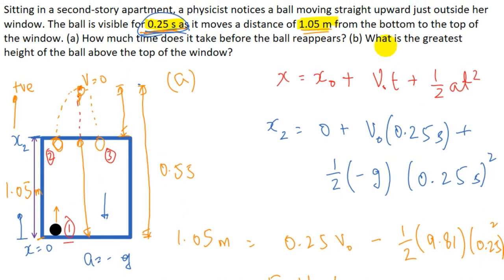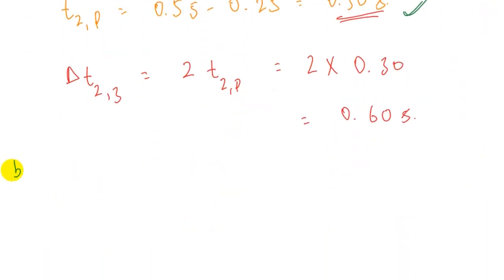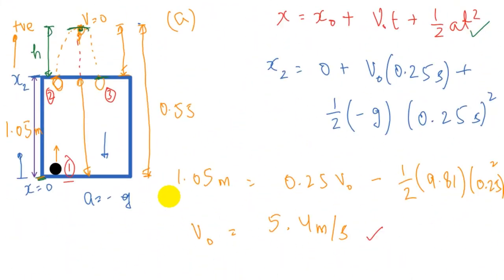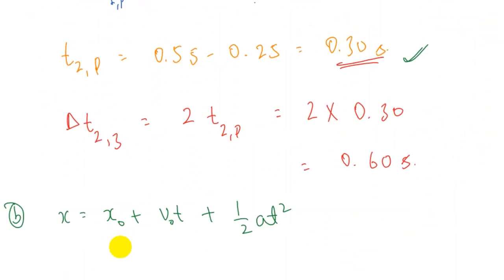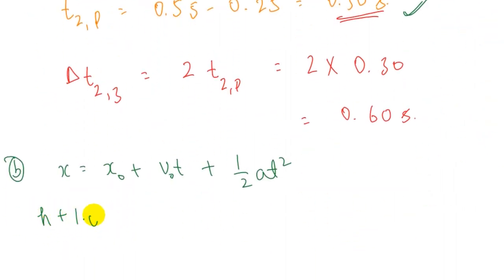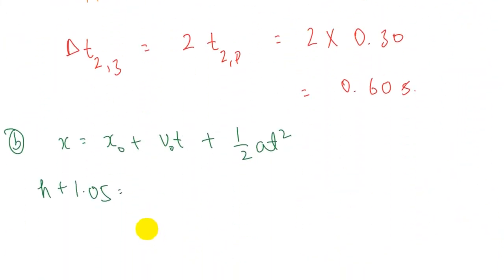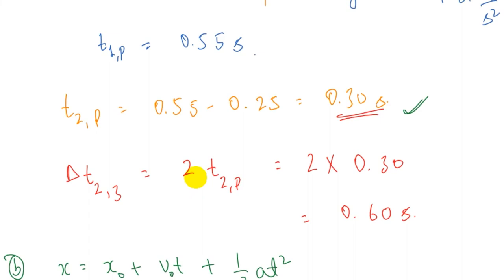In part B we need to find the greatest height of the ball above the window. Let this height be h. We will use the kinematic equation x = x₀ + v₀t + ½at² between point 1 and the peak value. The final position at the peak is h + 1.05, and the initial position is 0. The time from point 1 to the peak is 0.55 seconds and v₀ = 5.4 m/s.